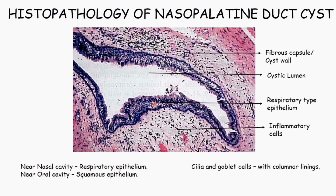The type of epithelium seen in the cyst depends upon the position of the cyst. Cysts developing within the superior aspect of the canal, near the nasal cavity, are more likely to have respiratory epithelium. Those in an inferior position near the oral cavity are more likely to show the presence of squamous epithelium.